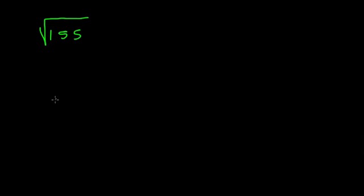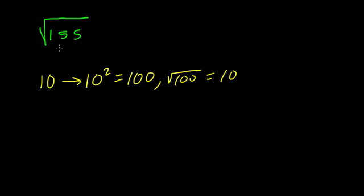The idea is that if you take a number like 10 as a starting point and square it, 10 squared is 100, and the square root of 100 is 10. But we're looking at the square root of 155. Since 100 is smaller than 155, the square root of 155 is above 10. I can keep hopping up.